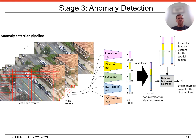The third stage of our method is anomaly detection on test video from the same scene from which the model was built. We scan the same fixed-sized video volume over the test video spatially and temporally as before. The feature vector, concatenated from the penultimate layers of the attribute networks, is computed for each video volume. The feature vector is then compared to the exemplars in the model for the corresponding region. The distance to the nearest neighbor exemplar is the anomaly score. If there are no similar exemplars to a test feature vector, it means this video volume is unlike any scene in the nominal video and is therefore anomalous.